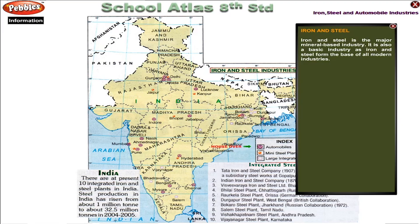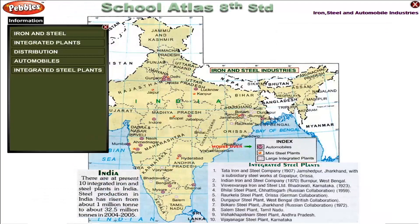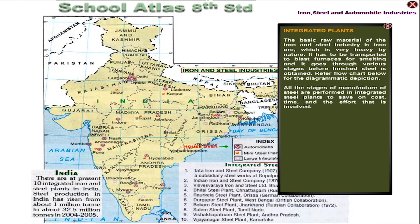Iron and Steel is the major mineral-based industry. It is also a basic industry as iron and steel form the base of all modern industries. The basic raw material is iron ore, which is very heavy by nature. It has to be transported to a blast furnace for smelting and goes through various stages before finished steel is obtained.